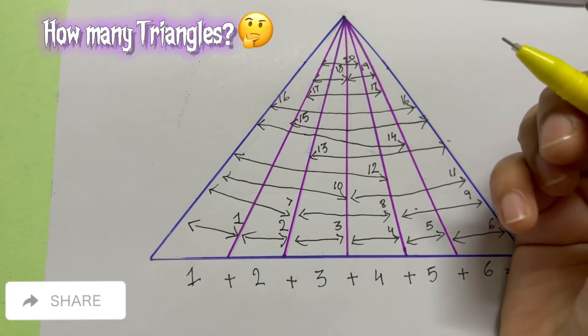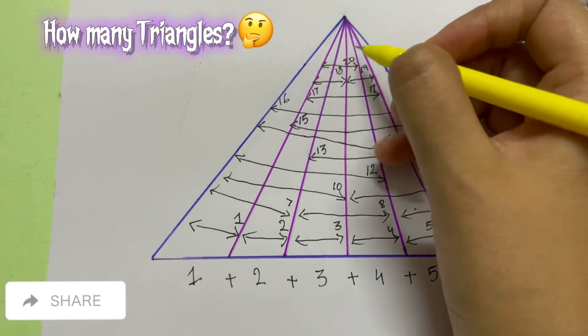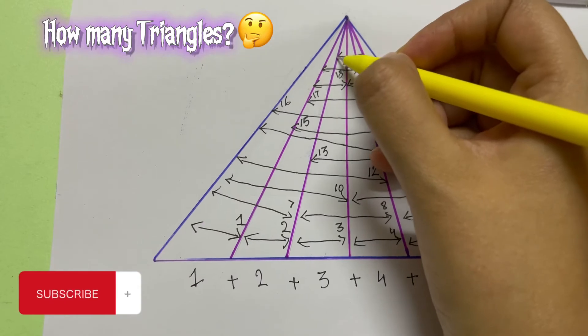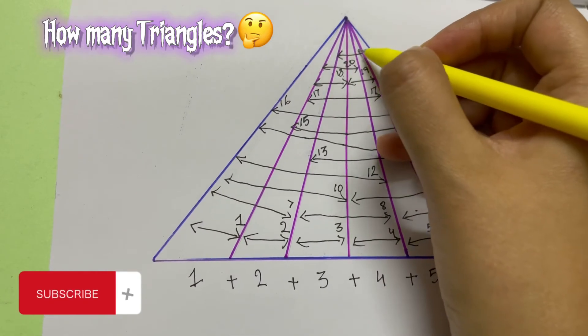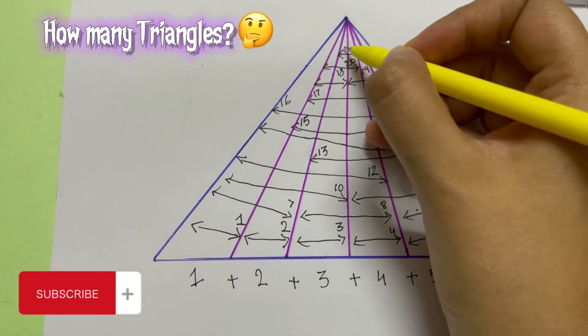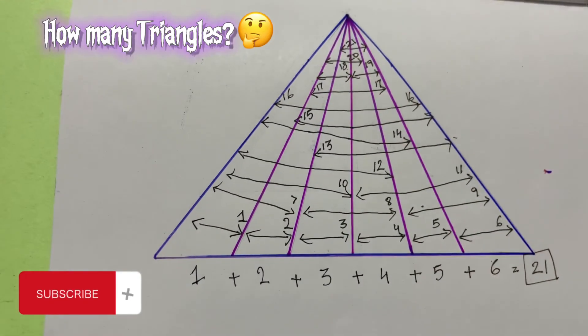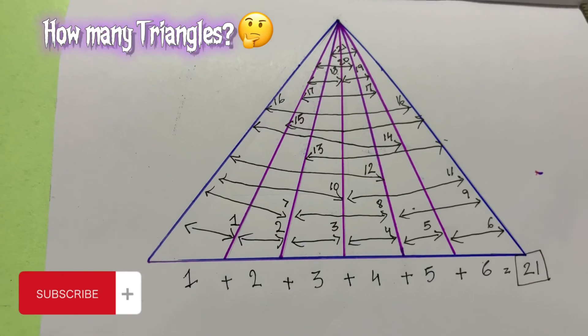Alright guys. And from here — one, two, three — this is my twenty-first triangle. Altogether, I have twenty-one triangles.